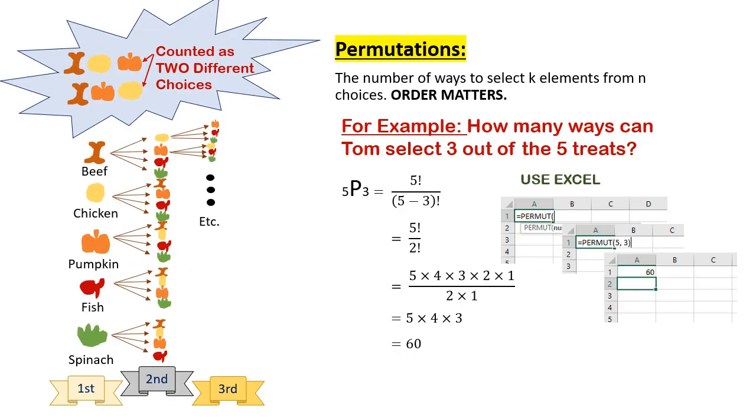For example, back to when Tom was choosing three out of five treats. Tom selecting the beef first, the chicken second, and the pumpkin third was counted as a completely different choice than Tom choosing the beef, pumpkin, then chicken. This makes sense if we're trying to see what order Tom likes his treats. What is his top most favorite treat of all time? His second most favorite treat, then his third. In this scenario, order matters, and permutations are the way to go.